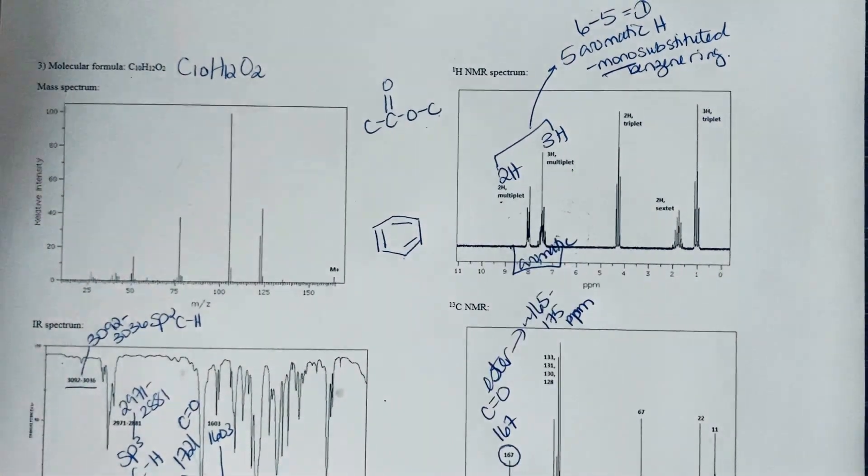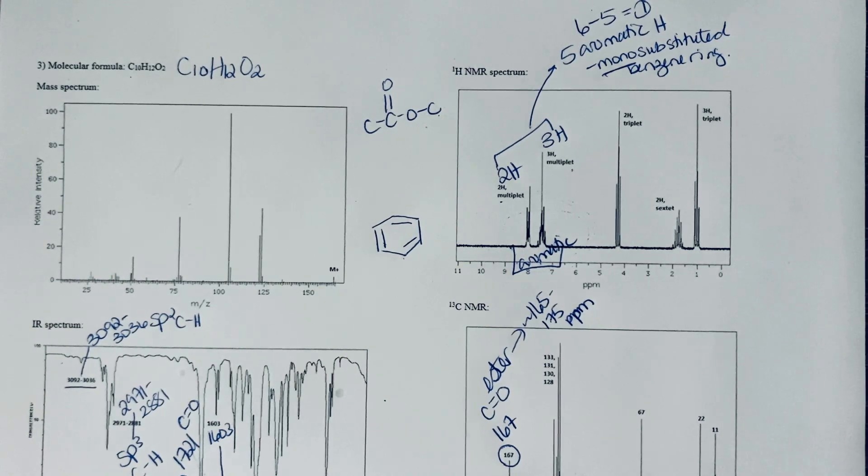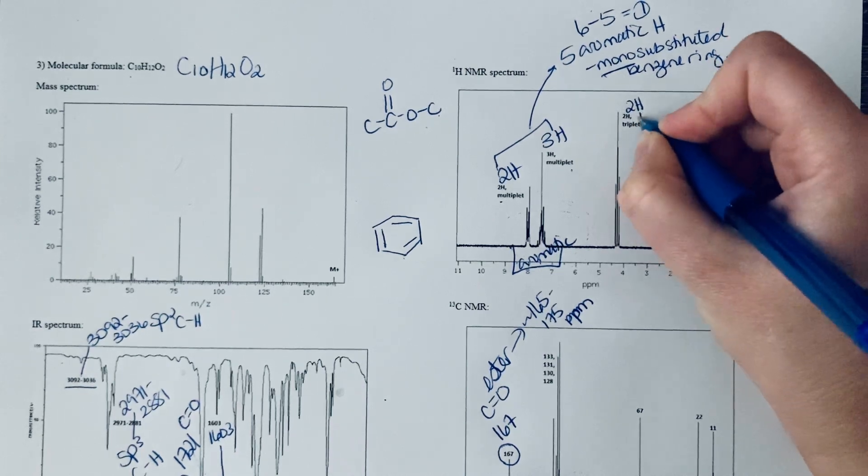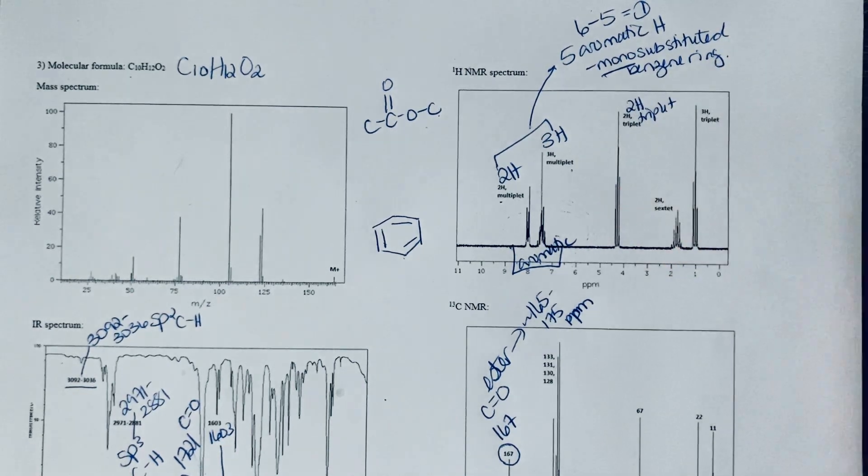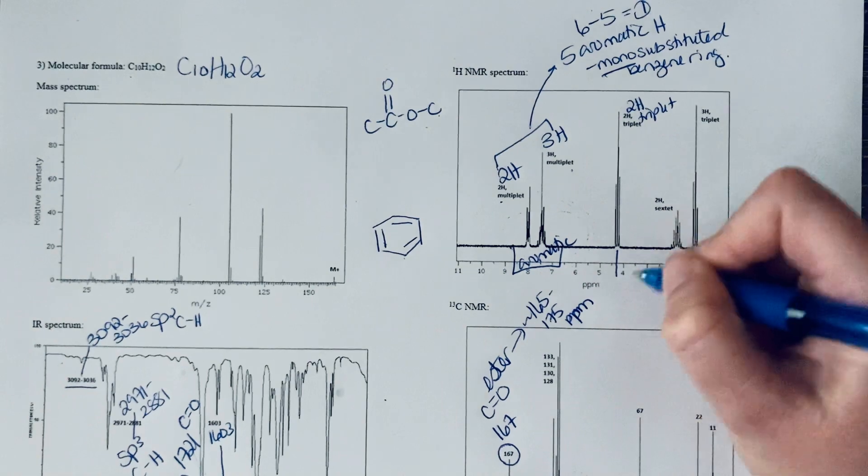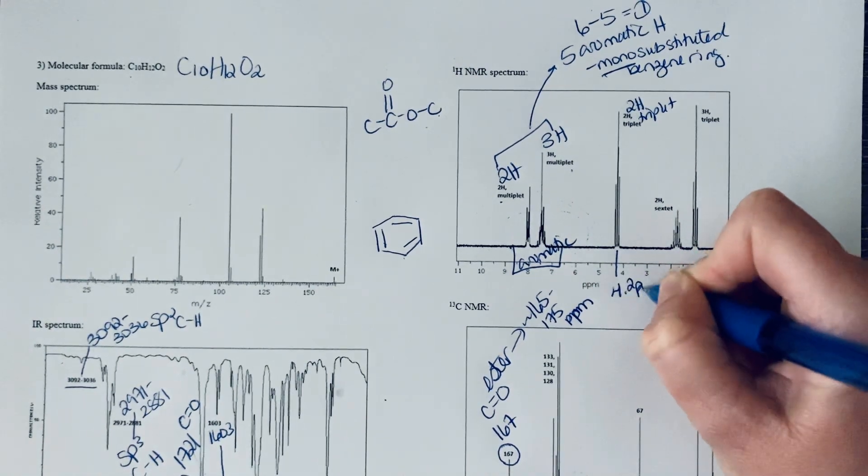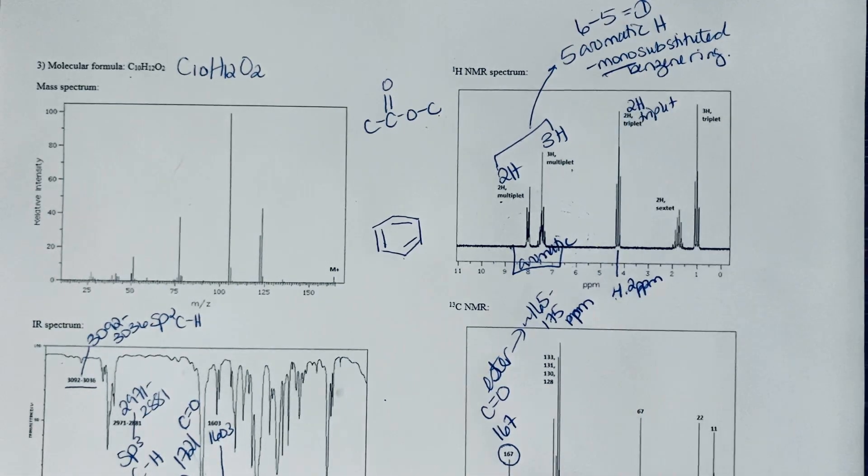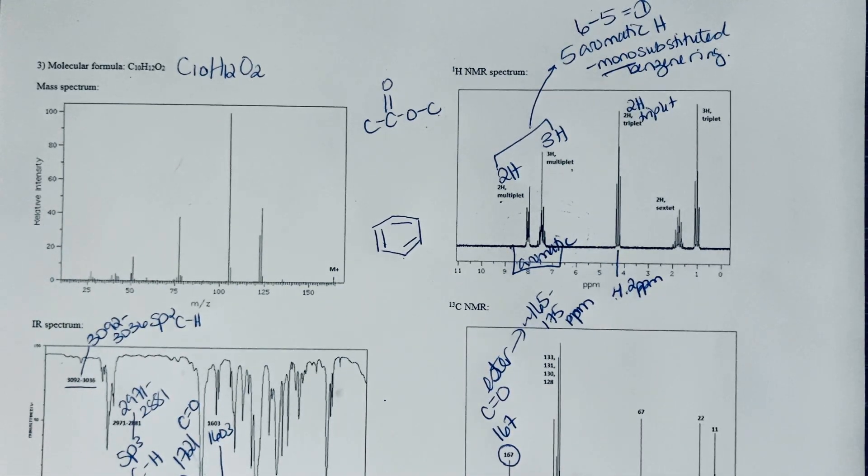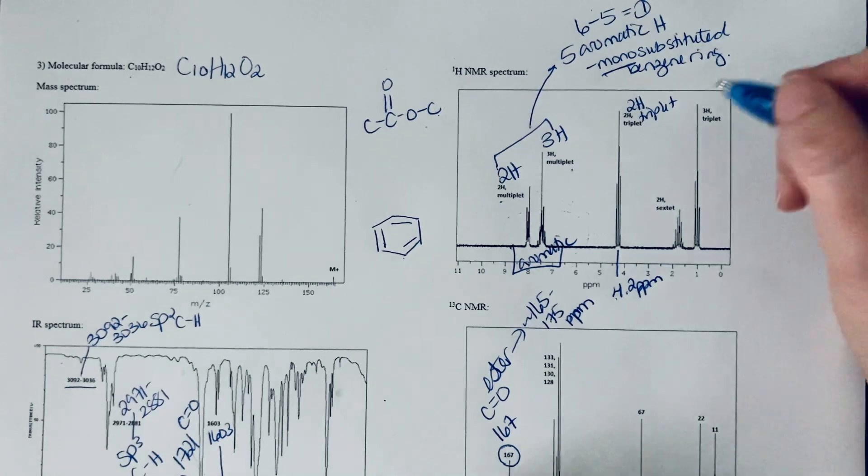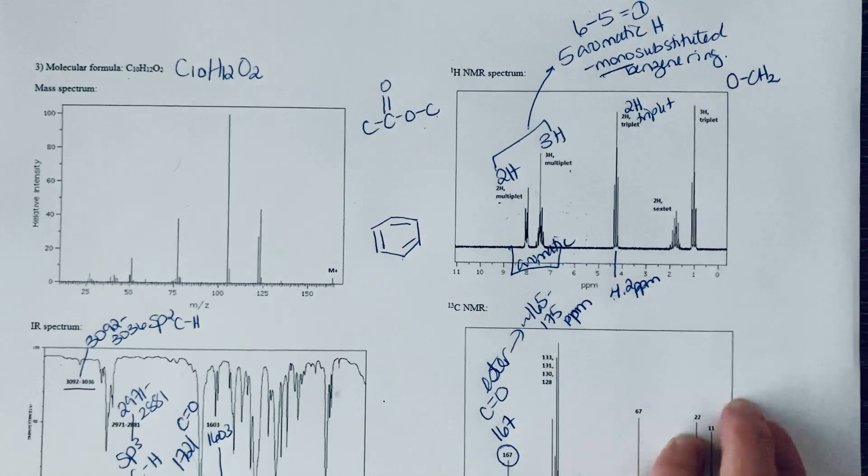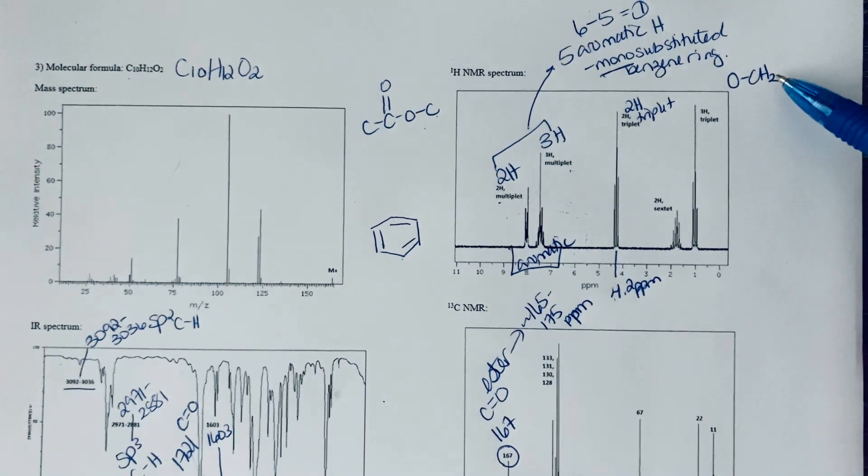Let's take a look at everything else in the proton NMR spectrum. We have a two hydrogen triplet, and if we look at that chemical shift value it looks like it's about 4.2 ppm. This looks like a signal for an alkane that's next door to an oxygen.